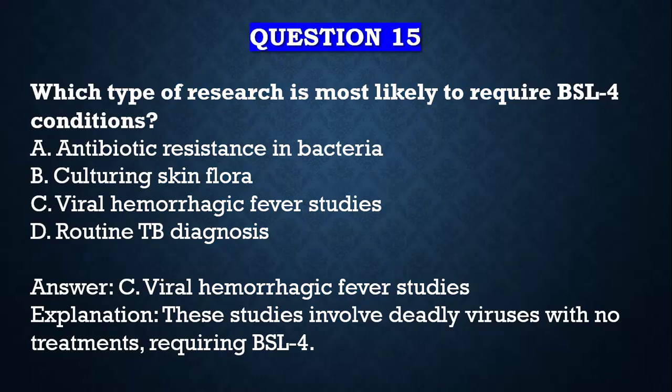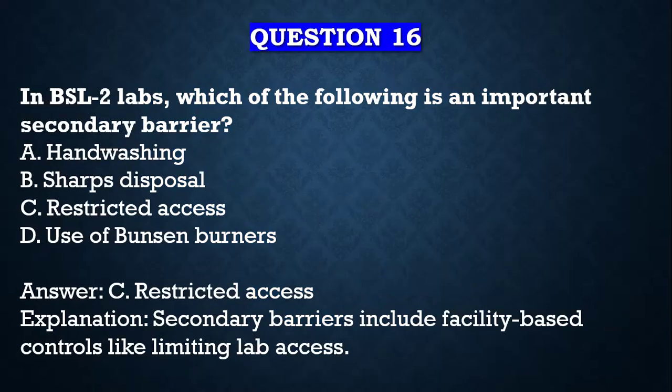Check out my video on BSL4 — you will find that the agents under BSL4 are the high-risk ones with usually no treatment. Question number sixteen: in BSL2 labs, which of the following is an important secondary barrier? A) Hand washing, B) Sharps disposal, C) Restricted access, D) Use of Bunsen burners. Your answer is C, restricted access, because secondary barriers include facility-based controls like limited lab access.